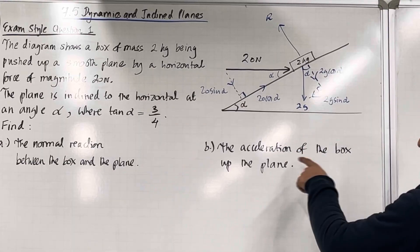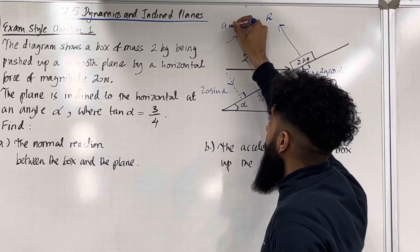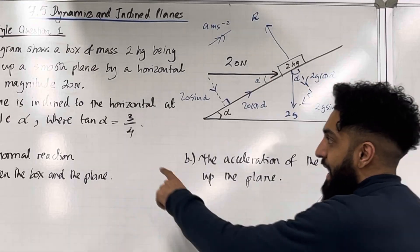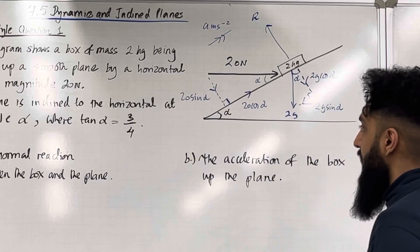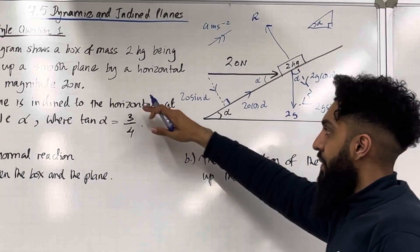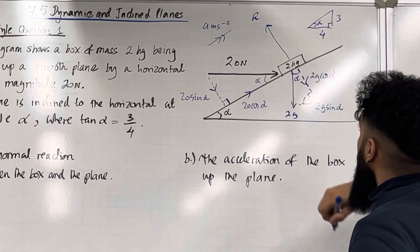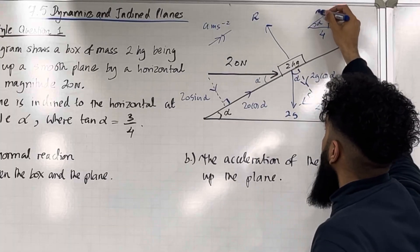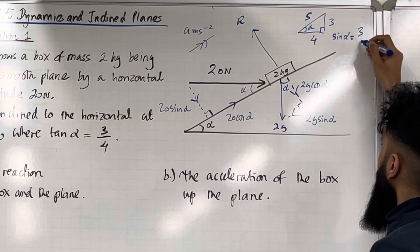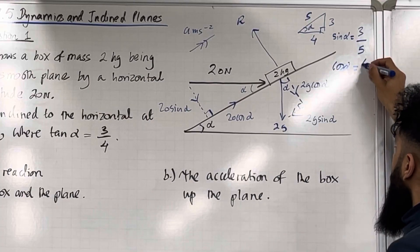In part B it says the acceleration of the box up the plane, so I can label the acceleration up the plane and call it a metres per second squared. We're given that tan alpha is equal to 3 over 4. I can construct a right angle triangle — opposite is 3 and adjacent is 4, so by Pythagoras' theorem the hypotenuse will be 5. Therefore sin alpha equals 3 over 5 and cos alpha equals 4 over 5.